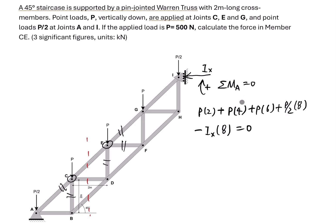This is the moment equation of equilibrium at support A. In this equation we have only one unknown force, Ix. Solving this equation gives Ix = 2P.